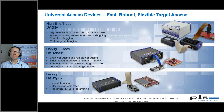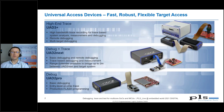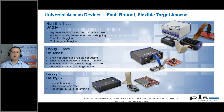In addition to the normal debug interfaces, we also provide an optional range extender for the UAD2 NEXT that allows debugging over distances of up to 2 meters between the base unit and the target system. Together with the network capability, the UAD2 NEXT is perfect for test tracks where there is only limited space at the target site.